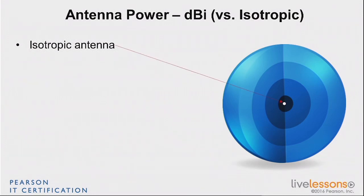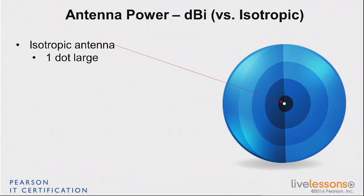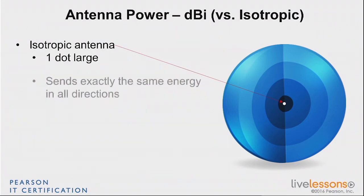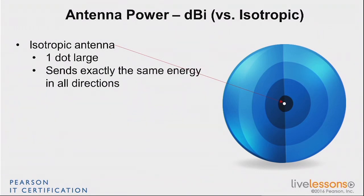It does not exist in the real world. We can't make things that are one dot large — we don't know how to make that. Even if it's one atom, it's more than a dot. An atom has a size you can measure, and sending equal energy in all directions is not something we can do either.